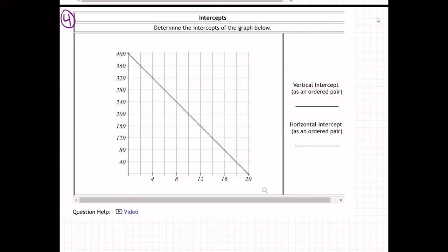So that's going to be this point right here, because that's where it hits the vertical axis. And so what are the coordinates of that point? That's over zero, up 400, because this is the origin down here, zero, zero.